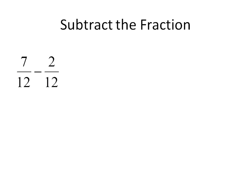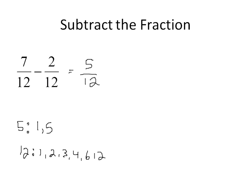Let's subtract these fractions: 7 minus 2 is 5, giving us 5 over 12. Searching for common factors: 5 is a prime number with only the factors 1 and 5, while 12 has the factors 1, 2, 3, 4, 6, and 12. They don't have any common factors other than 1, so this fraction is already in lowest terms.